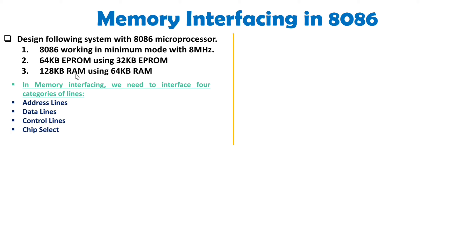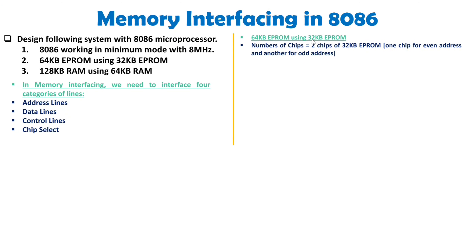First, let us figure out how many chips are required. For 64 KB of EPROM using 32 KB chips, we need two chips. With 8086, we have even and odd addressing, so one chip will have even addresses and the second chip will have odd addresses. This is fundamental to 8086 memory interfacing — always a pair of chips, one for even and one for odd addresses.